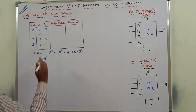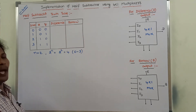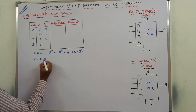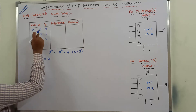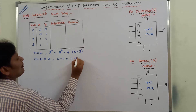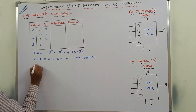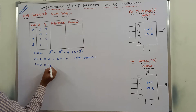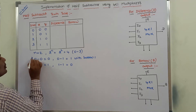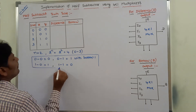Next, we have to find out the difference values and borrow values. To find out the difference and borrow values, we use these rules: 0 minus 0 is 0. Next, 0 minus 1 is 1 with borrow 1. Next, 1 minus 0 is equal to 1. And 1 minus 1 is equal to 0. These 4 rules we use to fill the difference column and borrow column.